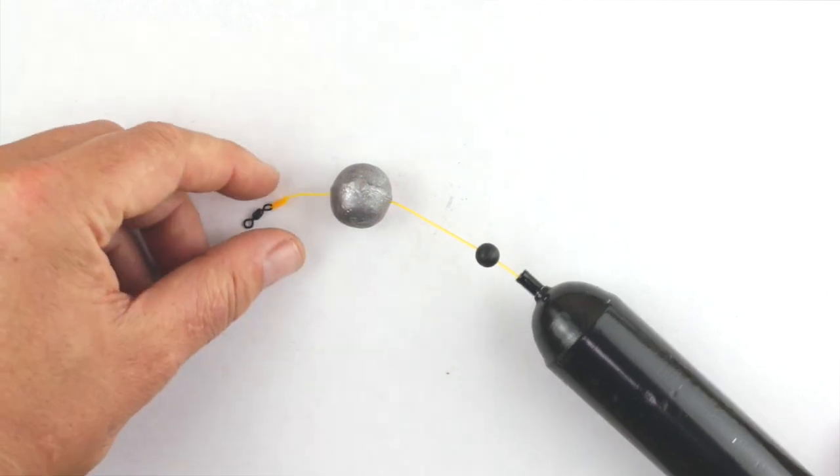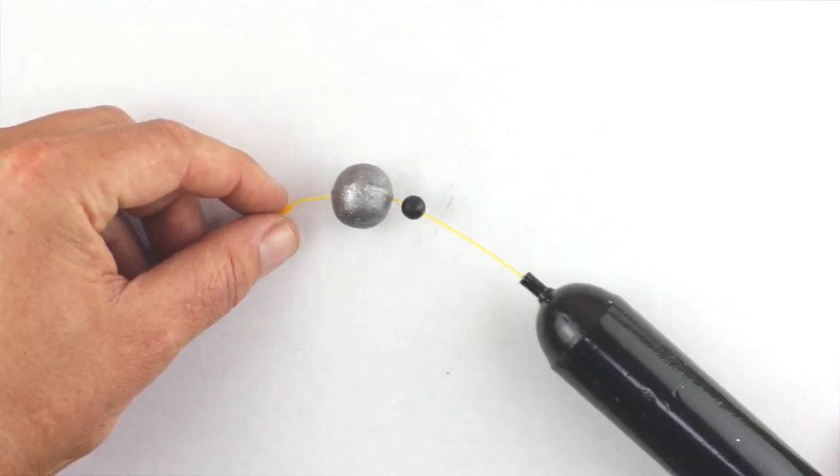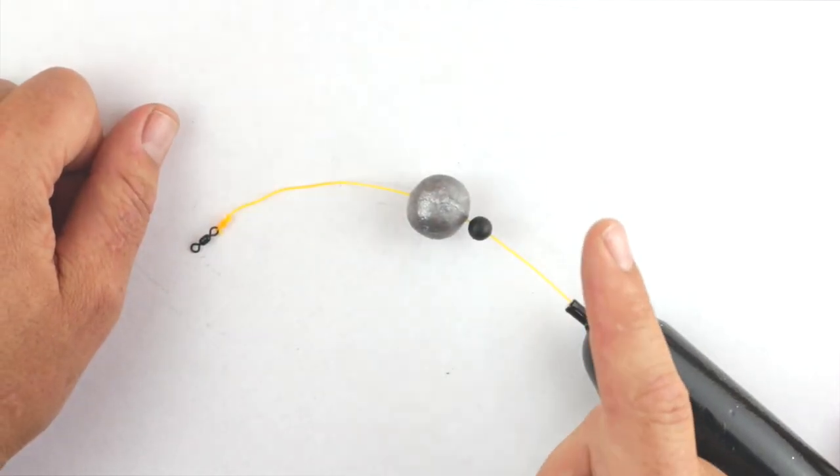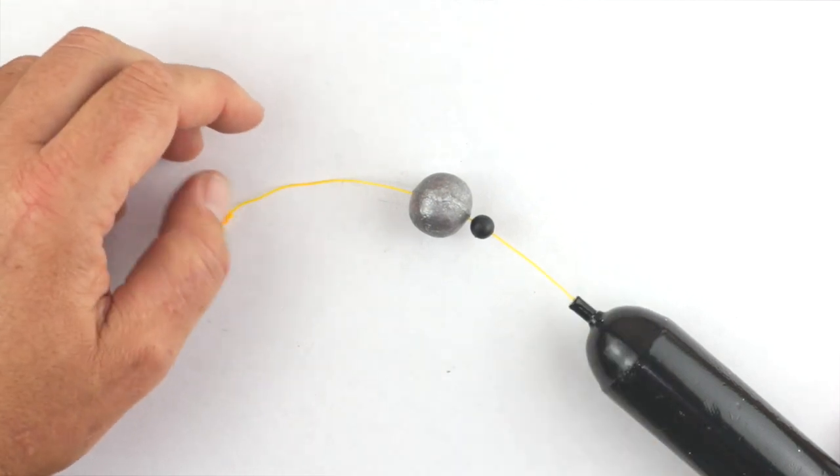But I'm going to put power gum either side of the weight, and then either side of that bead as well. Now, you do sometimes have a problem if you put power gum in between the bead and the end of the float there, that the power gum gets stuck up the float. But you certainly need to have power gum in there as well. So let's put that power gum on.